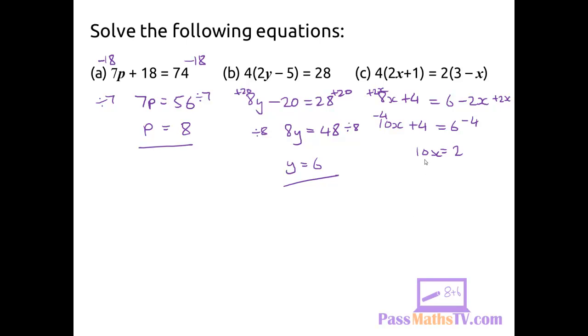To get rid of this 10, I divide by 10. I end up with x is equal to 2 over 10, which simplifies to 1 over 5. That's your answer.